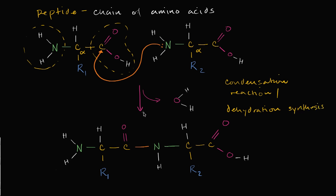Whenever I see a reaction like this, it's somewhat satisfying to just do the accounting and say: this is going to bond with that, and I'm going to let go of an oxygen and two hydrogens, which net-net equals H₂O — a water molecule. But how could we actually imagine this happening? Can we push the electrons around? Can we do a little bit of high-level organic chemistry to think about how this happens? I'm not going to do a formal reaction mechanism, but really get a sense of what's going on.